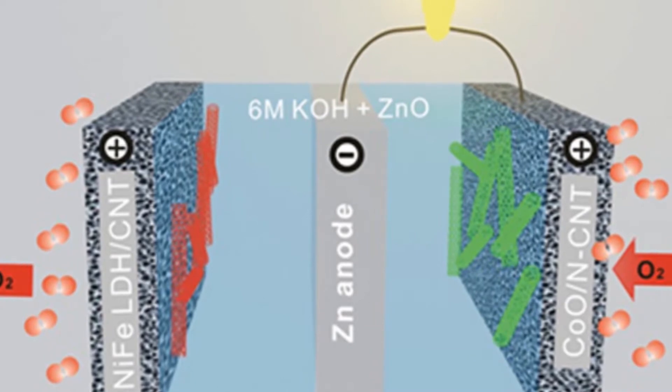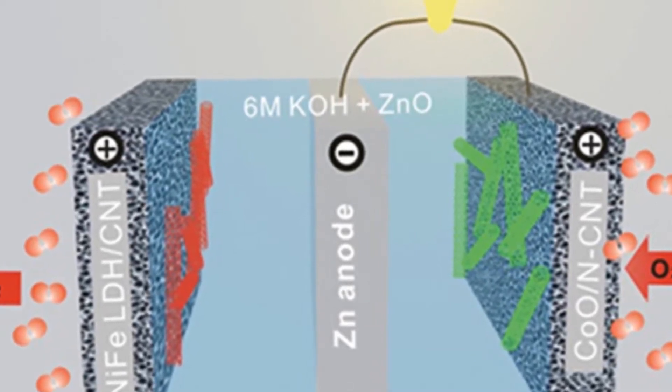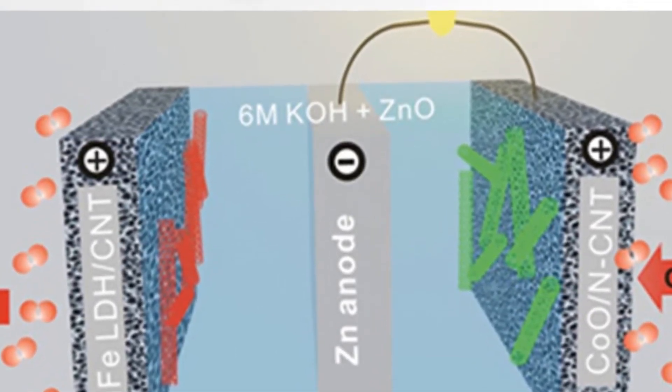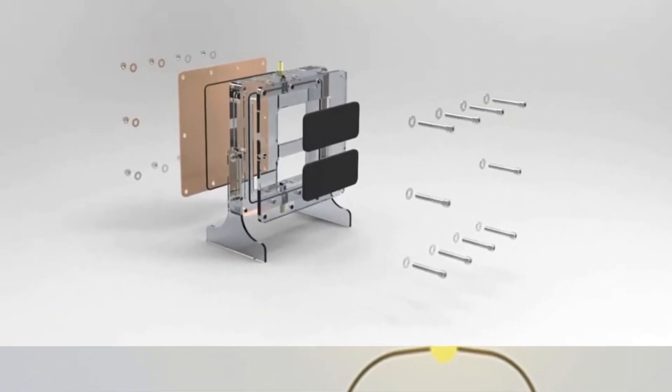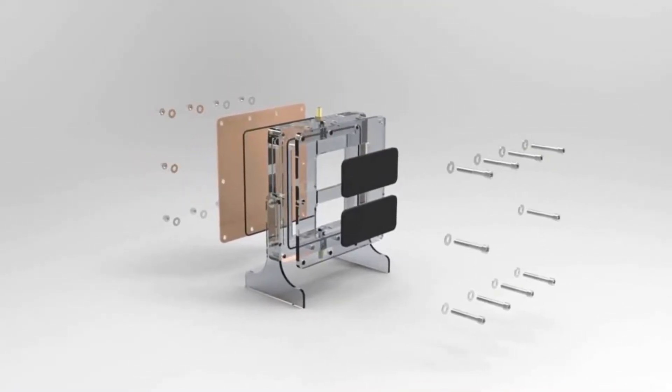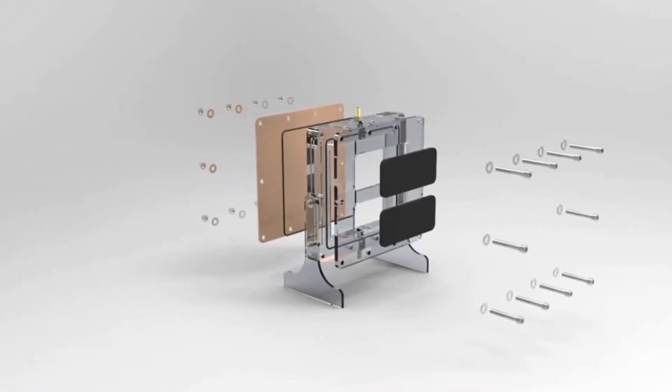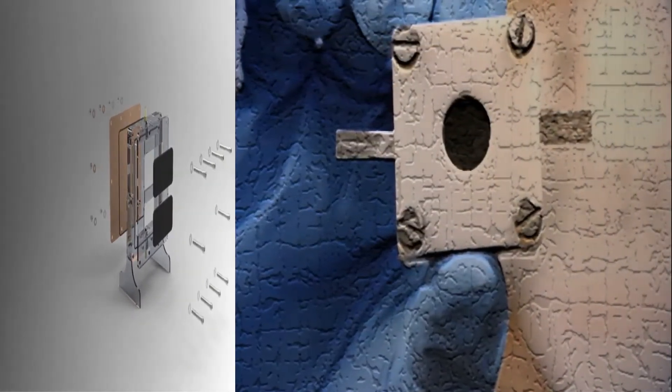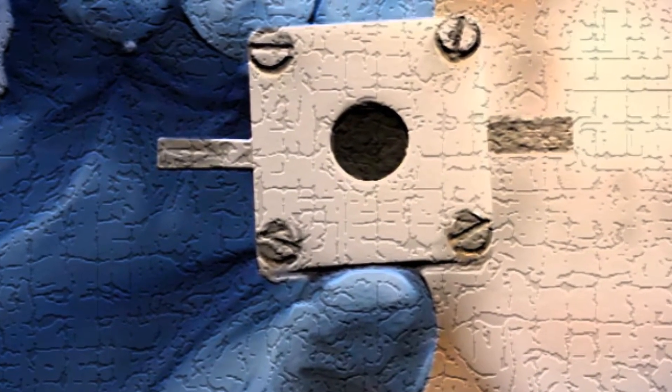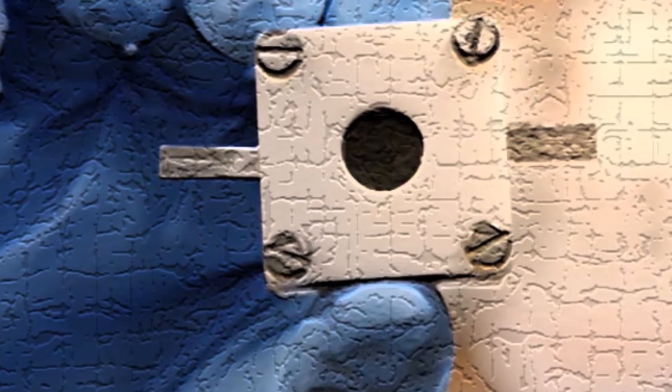Zinc air batteries are batteries powered by zinc metal and oxygen from the air. Due to the global abundance of zinc metal, these batteries are much cheaper to produce than lithium-ion batteries, and they can also store more energy, theoretically five times more than that of lithium-ion batteries, are much safer and are more environmentally friendly.